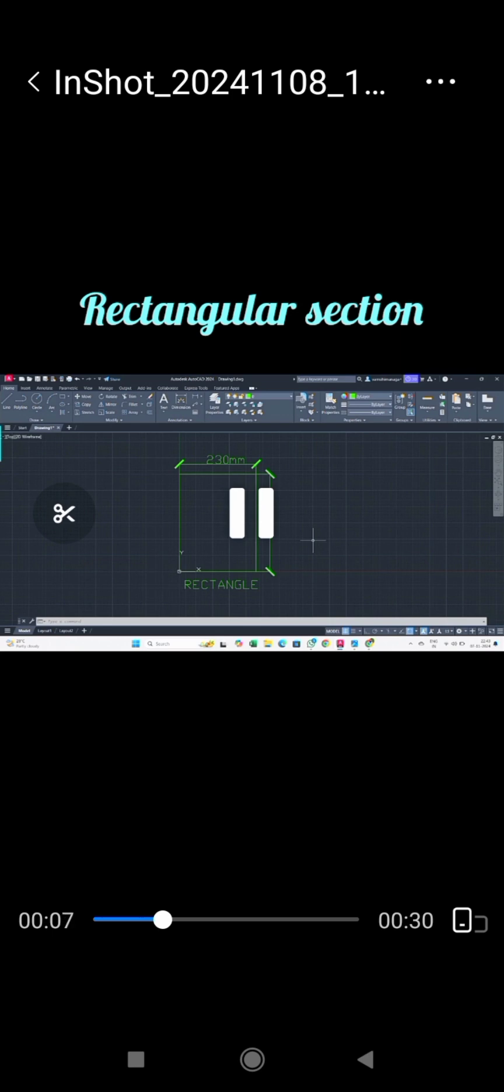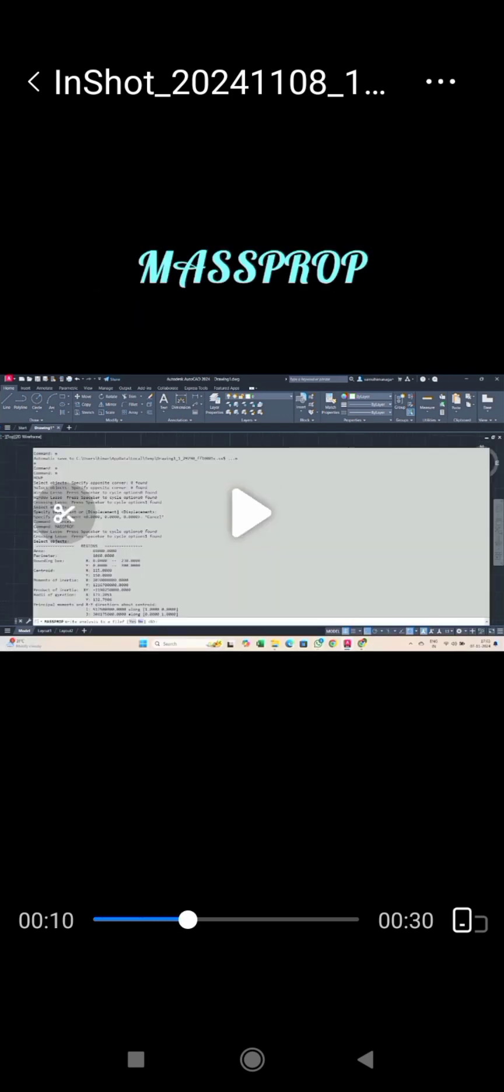Now go to your command bar and just type mass prop. As soon as you type the mass prop command and select the object, then you can get all this information. All this information means area, perimeter, moment of inertia...